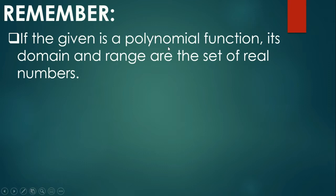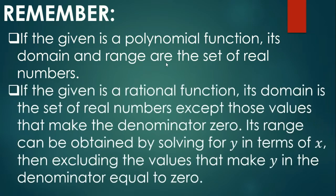When you see a negative exponent, a fraction exponent, a variable in the denominator, or a variable inside the radical symbol, it is no longer a polynomial function. If the given is a rational function, its domain is the set of all real numbers except those values that make the denominator 0. Its range can be obtained by solving for y in terms of x, then excluding the values that make y in the denominator equal to 0.